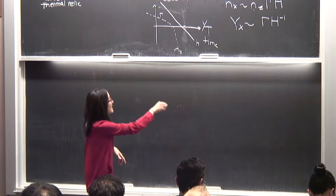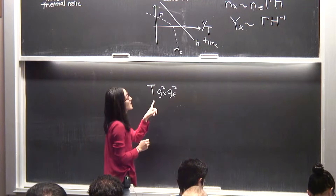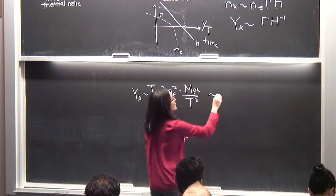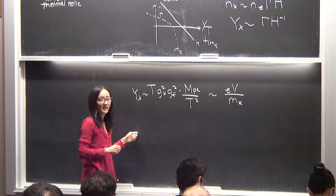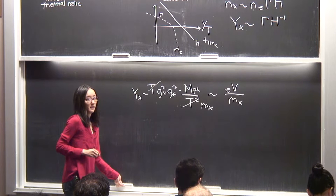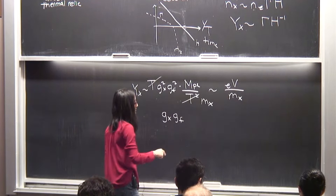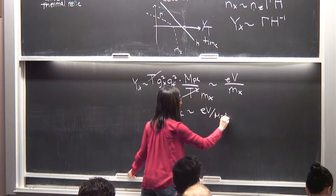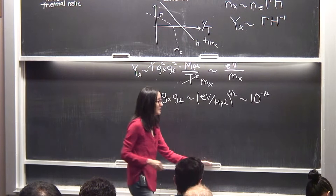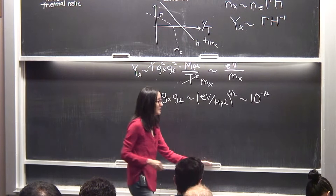Plugging in the rate and the inverse Hubble factor, we get Y_X equal to eV over M_X. For freeze-in, the product of the couplings must go as the square root of (eV over M_Planck). This is of order 10⁻¹⁴, though dropping some order-one factors it's more realistically around 10⁻¹².